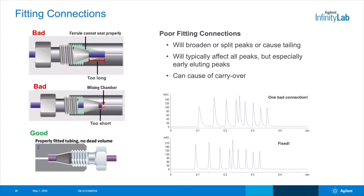A properly installed fitting is perfectly flush with zero dead volume. We can see here a chromatogram that shows the impact of just one poorly installed fitting on an LC system, resulting in consistently poor peak shapes.